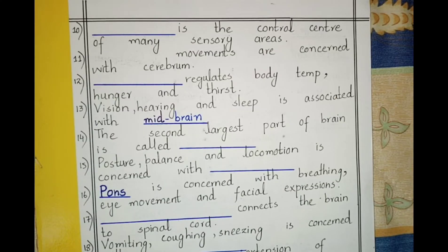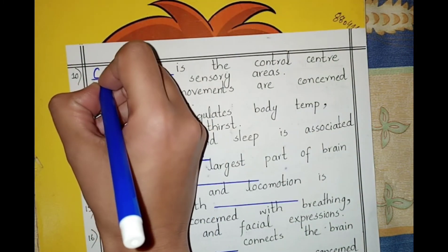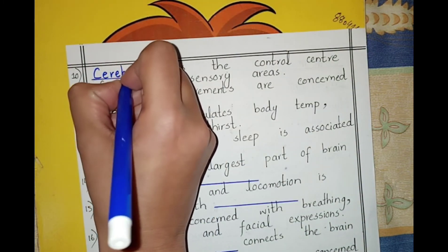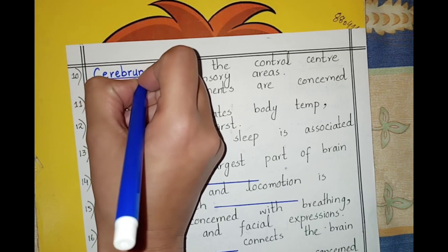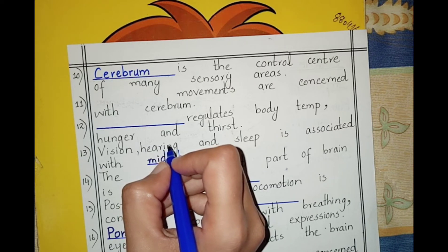Cerebrum is the control center of many sensory areas. This means that in our body, our sense of sight, sense of touch, and sense of hearing are all controlled by the cerebrum.